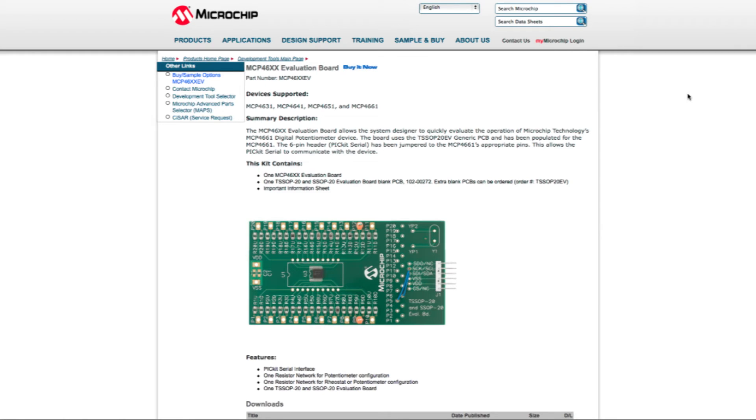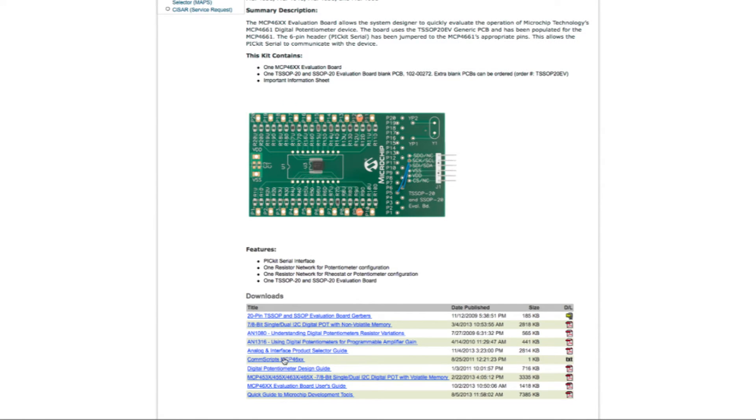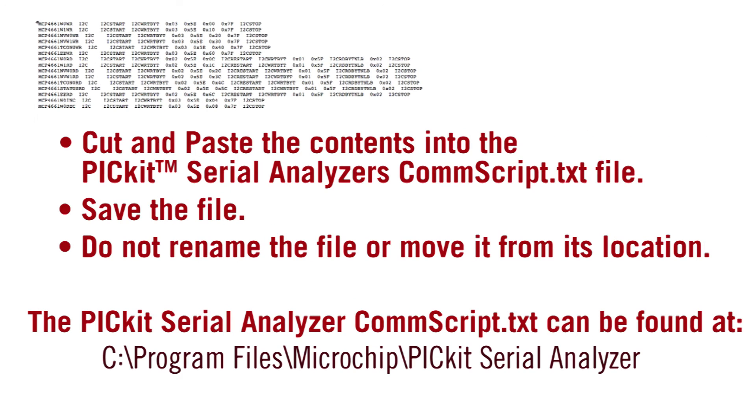Navigate to the MCP46XX EV webpage and open the MCP46XX EV commscripts.txt. You will need to cut and paste the contents into the PicKit serial analyzer's commscript.txt file and save the file. Do not rename the file or move its location.